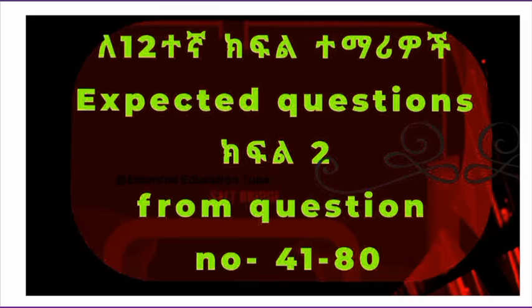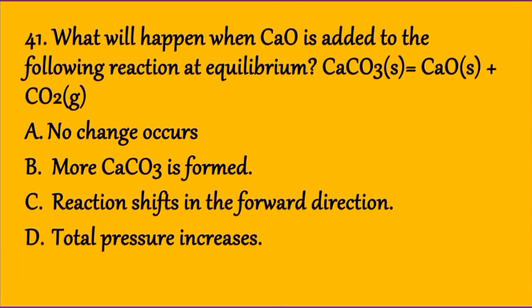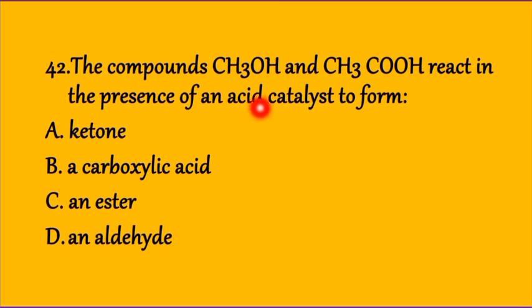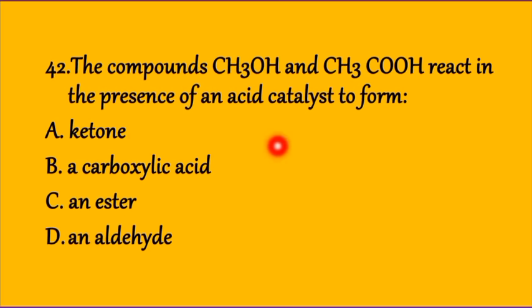Question number 2: The compound methanol and acetic acid react in the presence of an acid catalyst to form what? Alcohol methanol plus acetic acid, which is a carboxylic acid, react in the presence of acid catalyst. The options are: A) a ketone, B) carboxylic acid, C) an ester, D) an aldehyde. The condensation reaction between alcohol and carboxylic acid produces an ester.